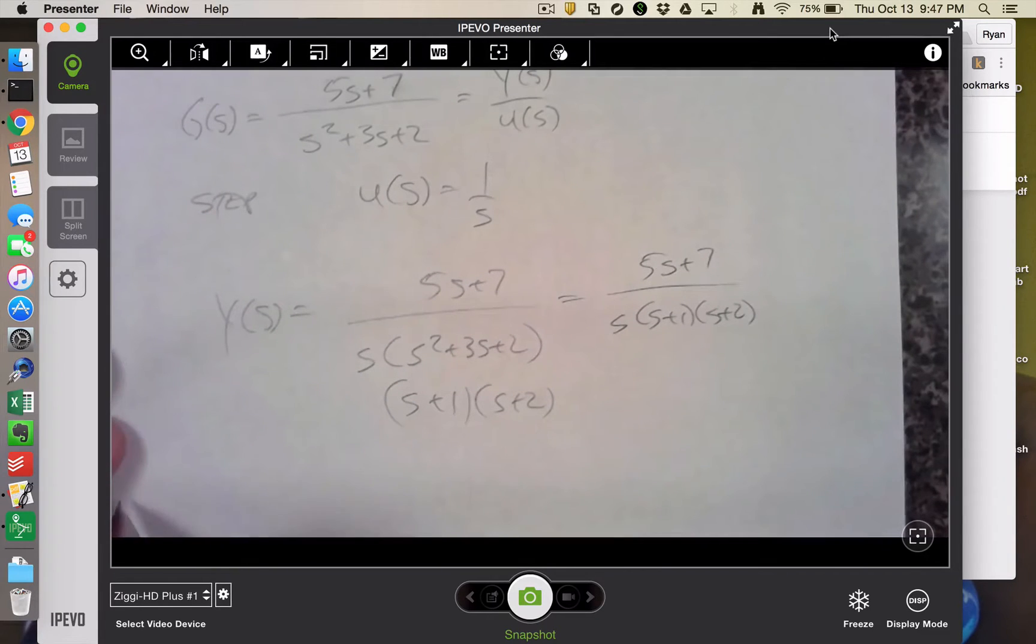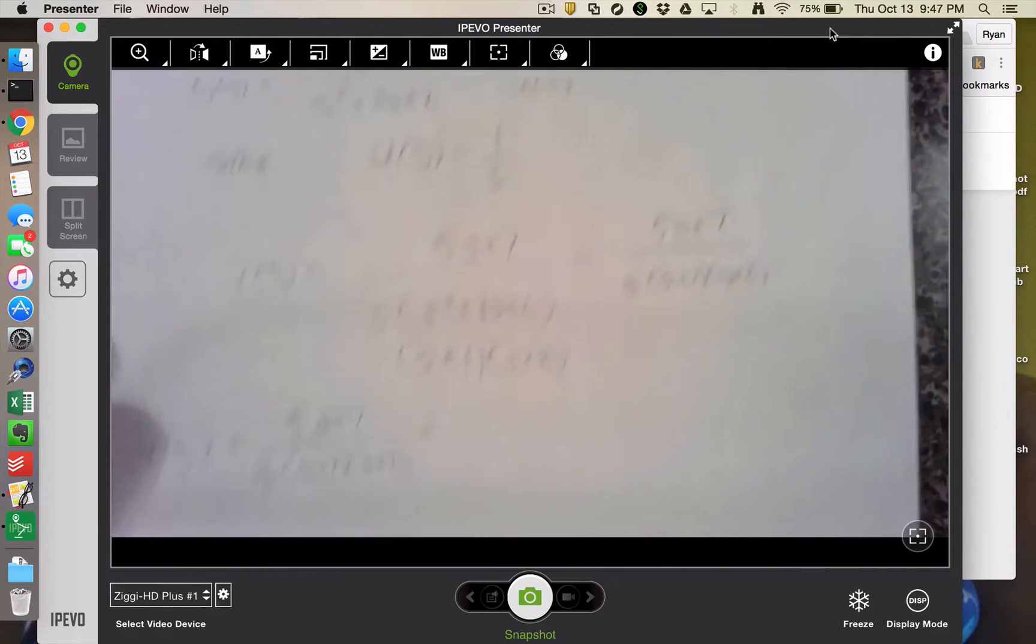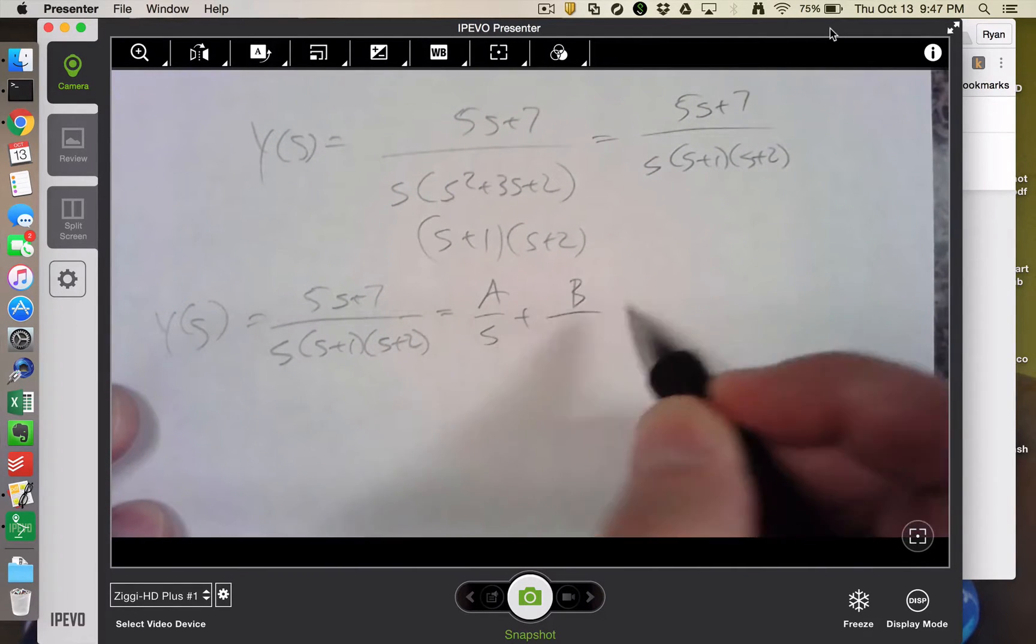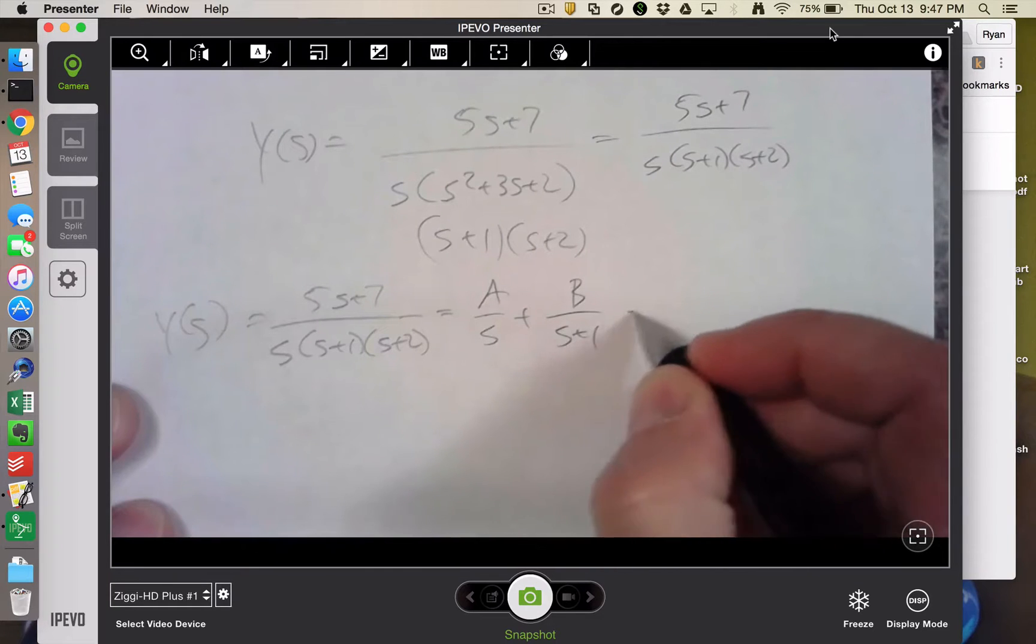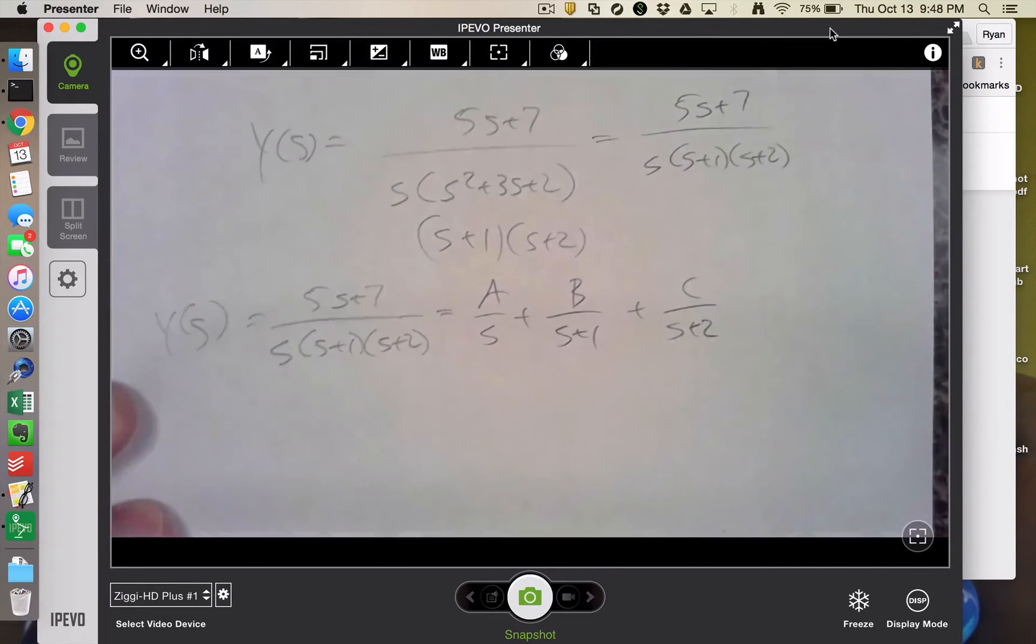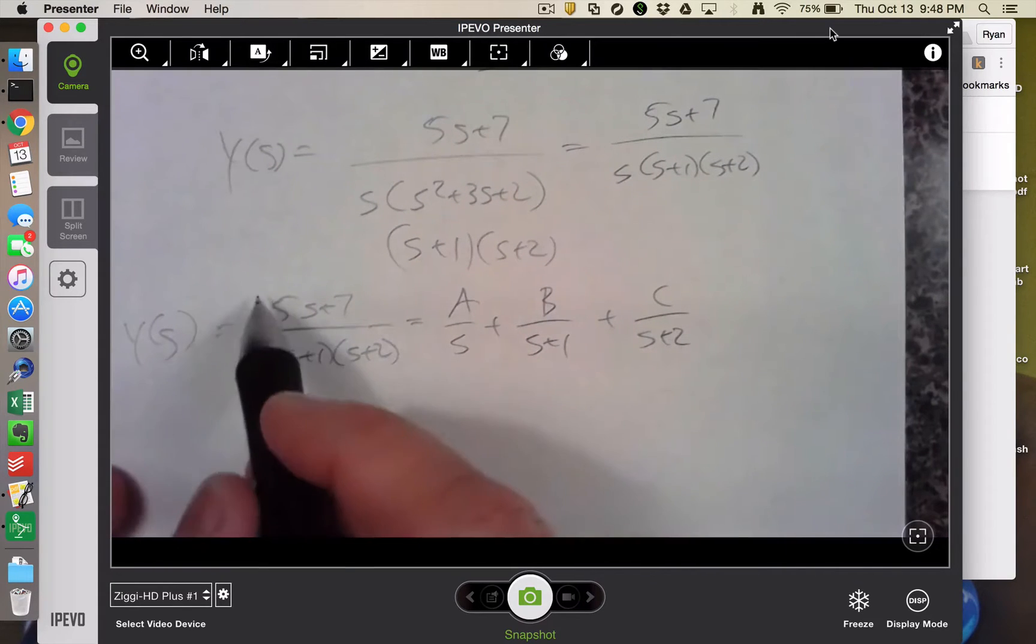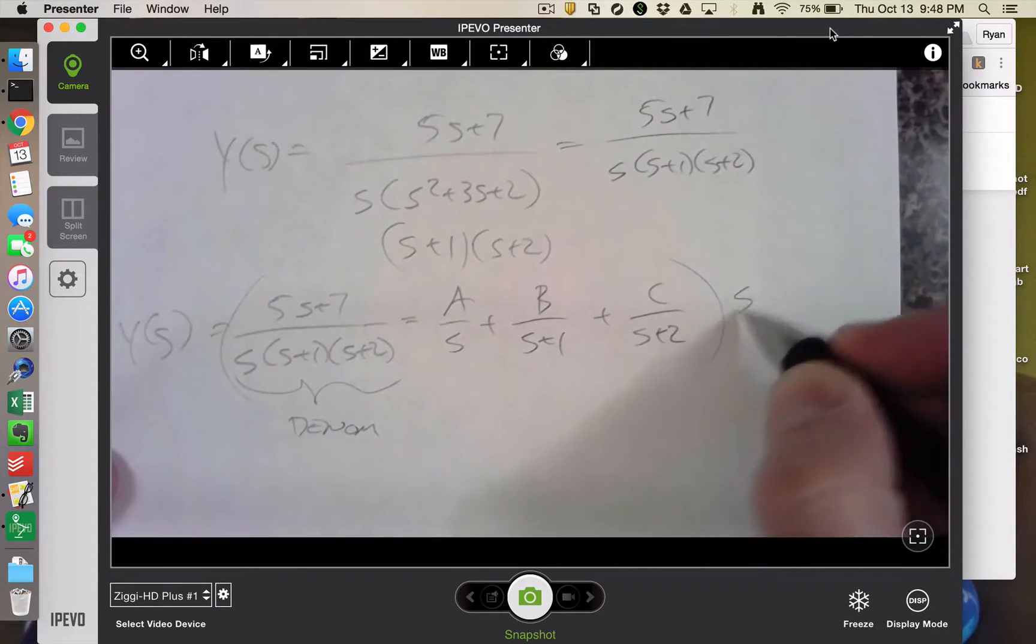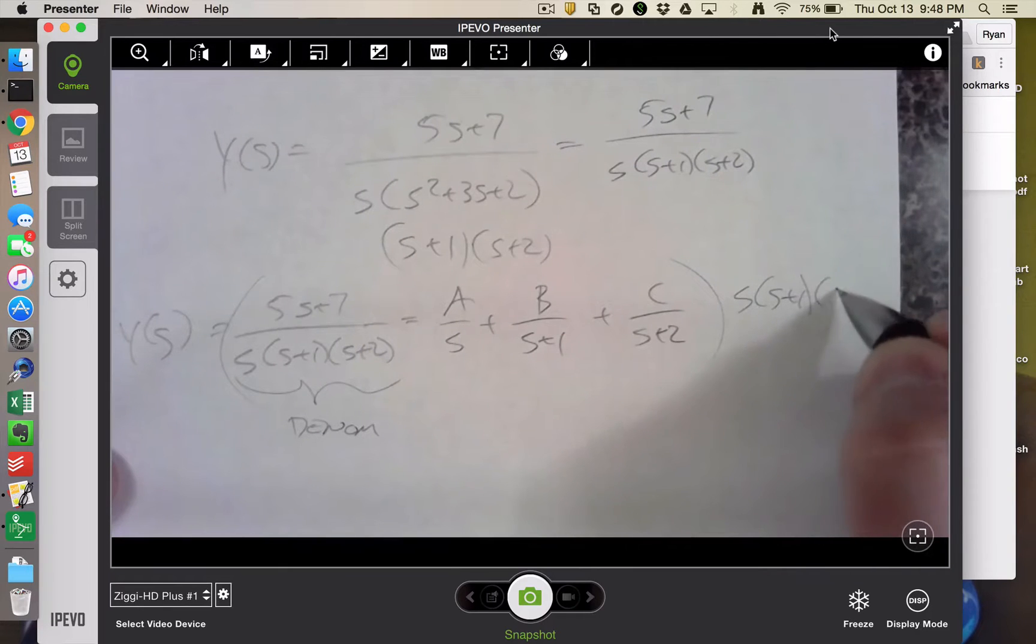Now I need to choose the form of my partial fraction expansion. Since I have distinct real roots, this is relatively straightforward. I could just write this as a over s plus b over s plus 1 plus c over s plus 2.